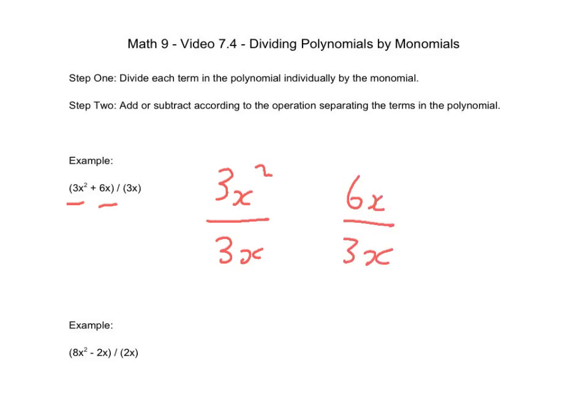Step two says we're going to add or subtract according to the operation that's already given there. So I look at it right here, there's an addition sign. So the answer is going to be added together. So now I'm just going to do each of those. So 3x squared divided by 3x, well, the 3's cancel out, and then we've got x squared divided by x. Remember our exponent rules say that we're going to subtract those exponents. So 2 minus 1 is just 1, so it's x will be the first one.